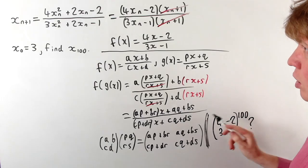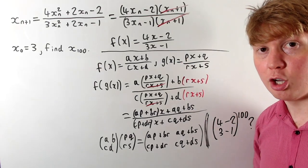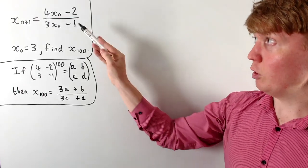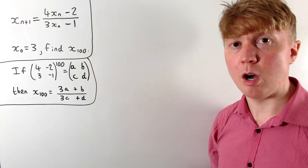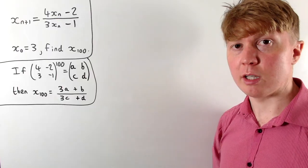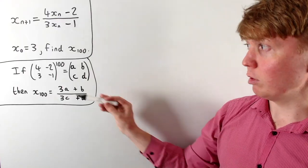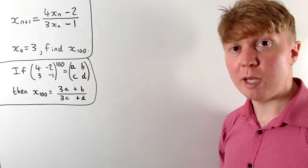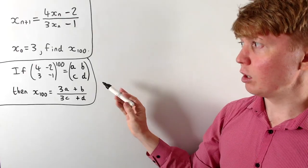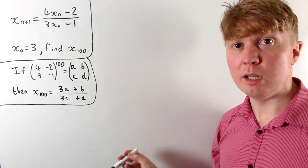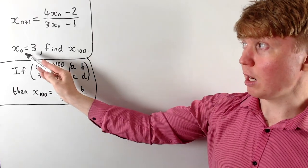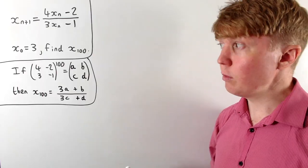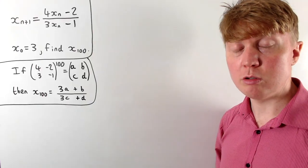More formally: since f(x) = (4x − 2)/(3x − 1) is a Möbius transformation, composing it with itself 100 times is equivalent to raising its corresponding matrix to the power of 100. If that matrix has entries a, b, c, d, then the composed function is (ax + b)/(cx + d), and we substitute our initial value x = 3. To calculate this matrix to the 100th power, we'll use diagonalisation.